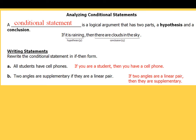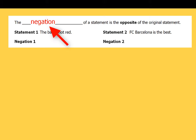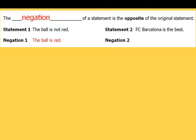Every once in a while we can take a look at something called the negation — the opposite of a statement. You can negate a statement and that's going to make the original statement the opposite. For example, 'the ball is not red' — the negation would just be 'the ball is red.' You're not going to say 'the ball is not not red' because grammatically that's incorrect.